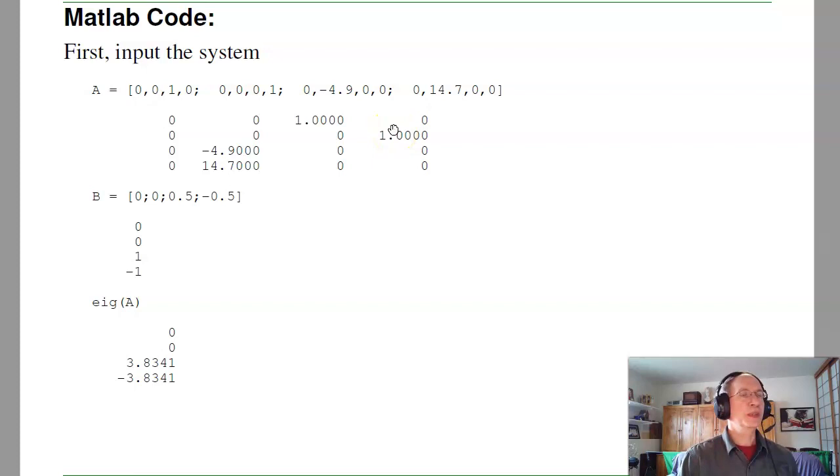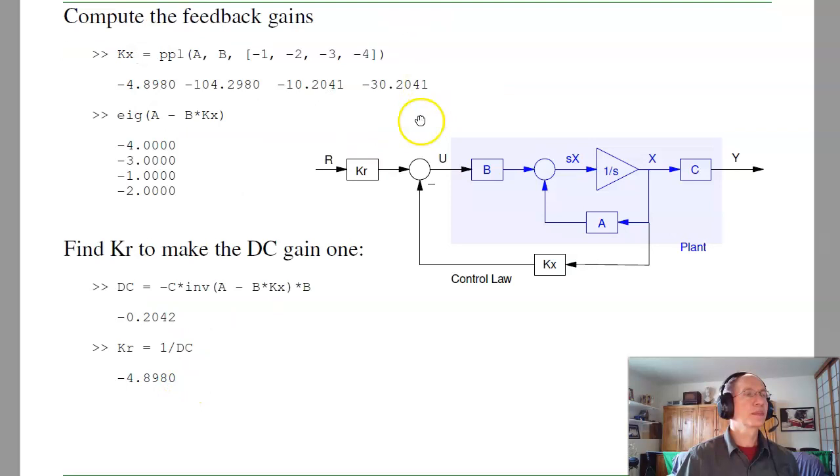So, to use pole placement, what I first have to do is input the system. So here's your A matrix, B matrix, and the eigenvalues of A is unstable. I'll then find the feedback gains using the MATLAB command pole placement, and I get my four gains, and it's a check. So it's good to check your answers. Are the eigenvalues of A minus B kx equal to minus 1, 2, 3, and 4? And, yep, they are. So I did it right.